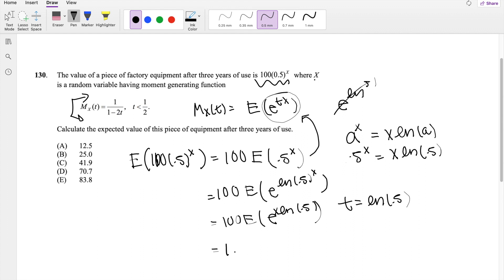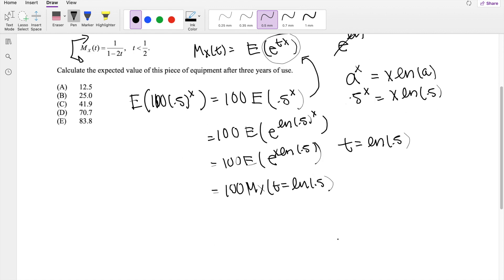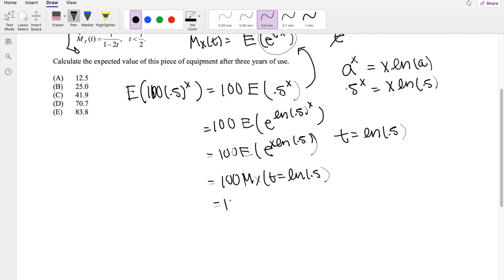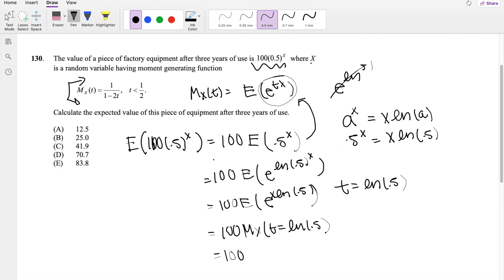So this is equal to 100 times the expected value, 100 times M of X of T being equal to natural log of 0.5. Right? So then the moment generated function at natural log of 0.5, I just have to plug in our T value here. So you get 1 over 1 minus 2 natural log of 0.5.